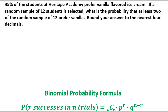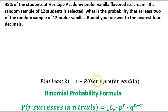At least 2 in probability is the equivalent of 1 minus the probability that 0 or 1 prefer vanilla. Because if 0 people prefer vanilla or 1 person prefers vanilla, that's the exact opposite of at least 2. Everything adds up to 1, so 1 minus P(0) minus P(1) gives us the probability of at least 2 — all other cases are covered.